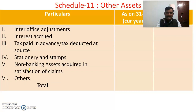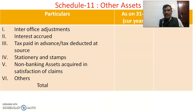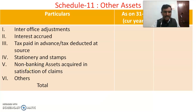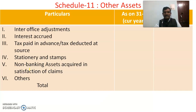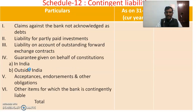Schedule 11 covers Other Assets, which include inter-office adjustments, interest accrued, tax paid in advance or tax deducted at source, stationery and stamps, non-banking assets acquired in satisfaction of claims, and others. These other assets are taken under Schedule 11 in the balance sheet.